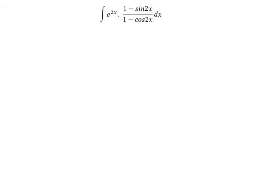We have cos 2x equal to 1 minus 2 sin squared x. Next, sin 2x equal to 2 sin x cos x. So we will apply this formula in this equation.